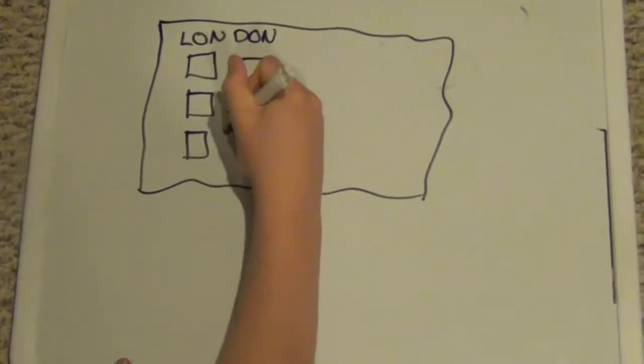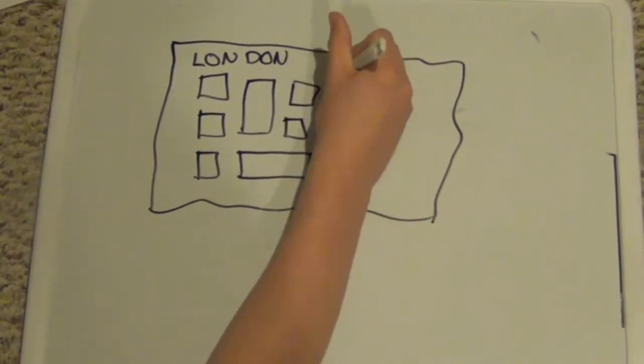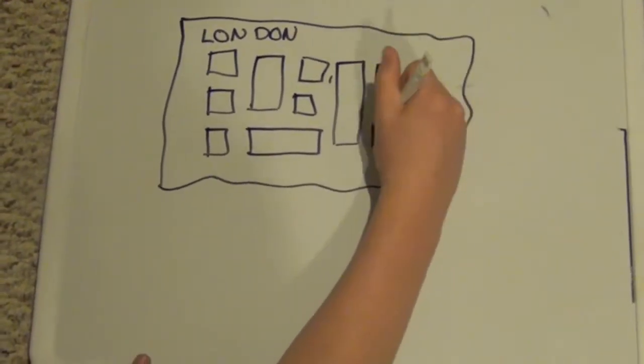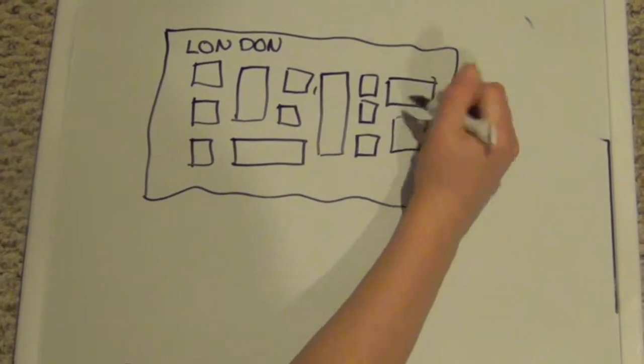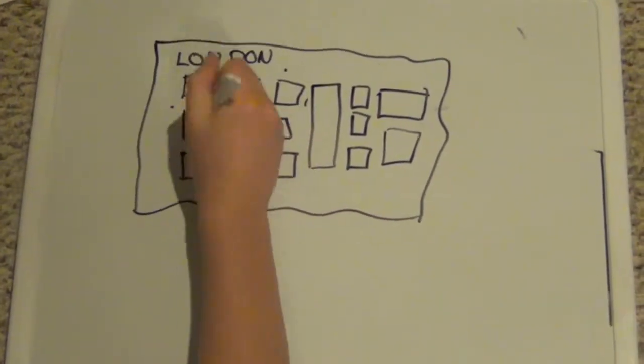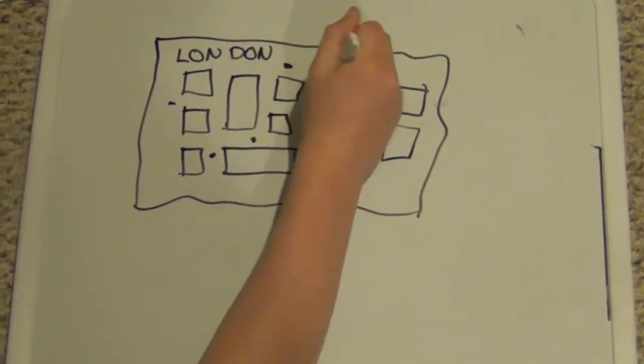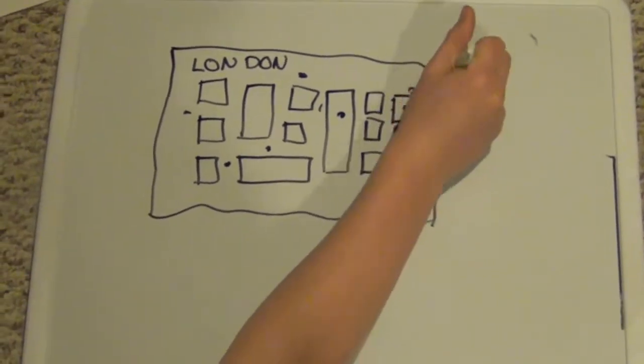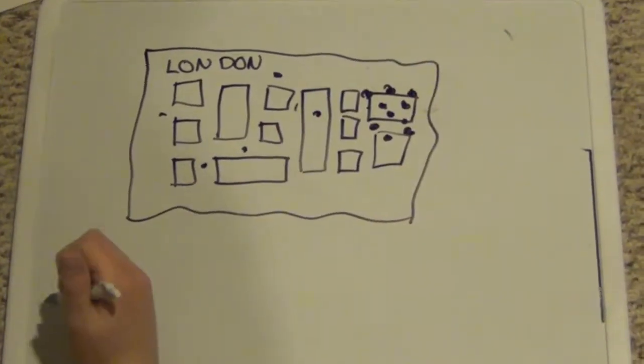His statistics were that S&V supplied 40,046 houses with 4,093 outbreaks. Lambeth supplied 26,107 houses with 461 outbreaks, and the other 256,423 houses had 4,800 deaths.